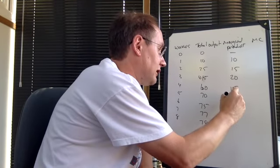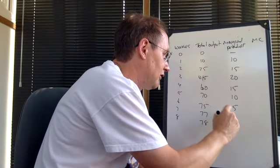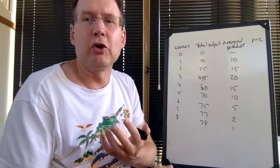The fifth one, 70 minus 60, which is 10. The sixth one, 75 minus 70, which is 5, then 2, and then 1. So what's the marginal cost?